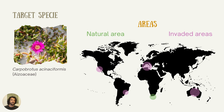My target species is Carpobrotus acinaciformis. This species is native from South Africa, where it's present in coastal dunes. It has abundant resources for pollinators such as bees and beetles, and it can easily access degraded environments. It's a species that is invasive in the Mediterranean, Australia, the west coast of the United States, and also here on the east coast of Brazil.